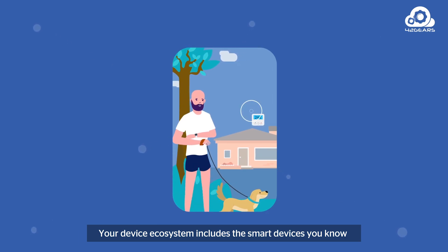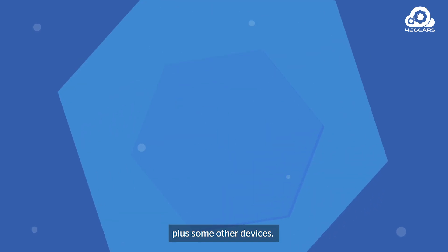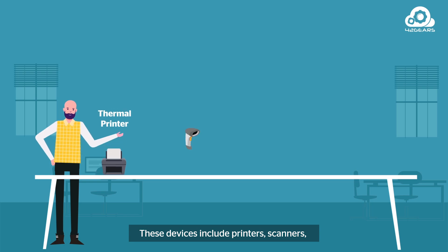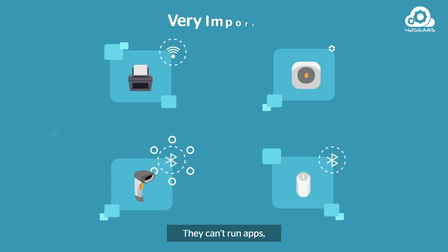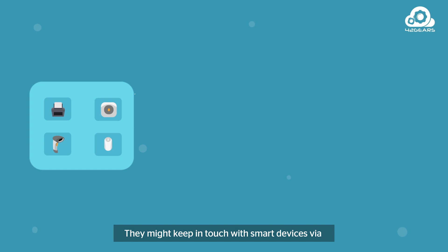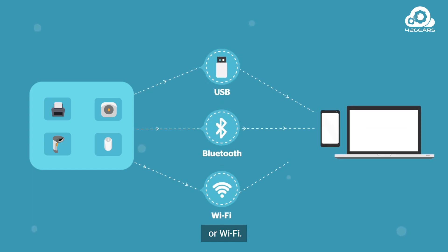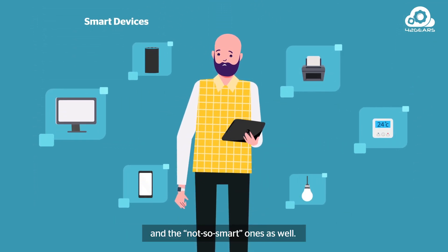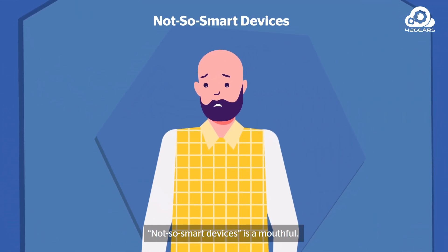Your device ecosystem includes the smart devices you know and love, plus some other devices — let's call them not-so-smart devices. These include printers, scanners, computer mice, sensors, and much more. They can't run apps and they can't do much, but what they do is very important. They might keep in touch with smart devices via USB, Bluetooth, or Wi-Fi. If you want to manage all your business endpoints, you need to get control over smart devices and the not-so-smart ones as well.